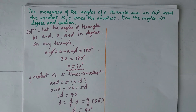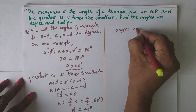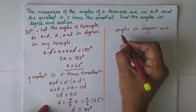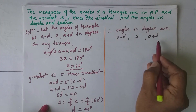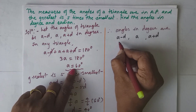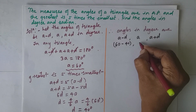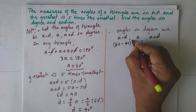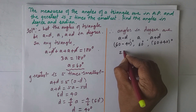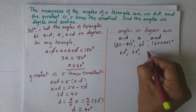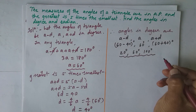Now we find the angles. The angles are a−d, a, and a+d. With a = 60° and d = 40°: 60°−40° = 20°, a = 60°, and 60°+40° = 100°. So the angles in degree measure are 20°, 60°, and 100°.